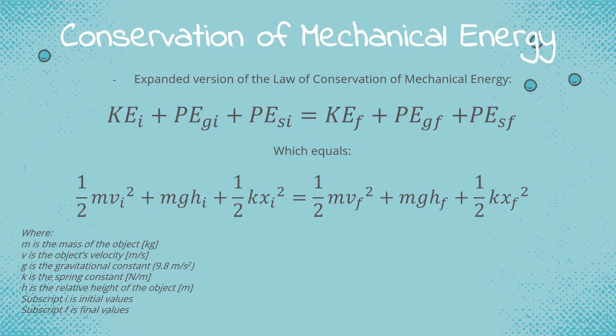The nomenclature: m is the mass of the object, v is the object's velocity, g is the gravitational constant (9.8 m/s²), k is the spring constant, h is the relative height of the object, and subscripts i and f refer to initial and final values. If a problem includes spring elements, velocity, and a change in height, you'll use all three terms on either side of the equation.